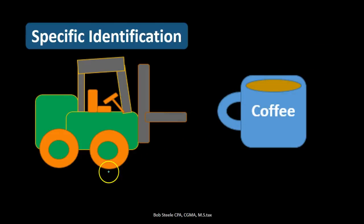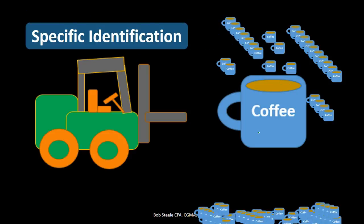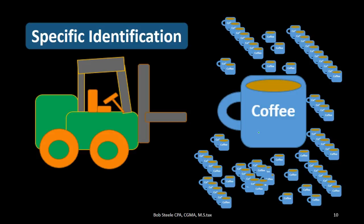We used specific identification here because forklifts are large, we don't have many of them, and they can differ in features and color. However, if we were selling something like coffee mugs — small, identical items in large quantities — specifically identifying each one wouldn't be worth the effort. For items that are all the same and numerous, we'd use an estimating method such as first-in first-out, the average method, or last-in first-out, which we'll discuss next time.